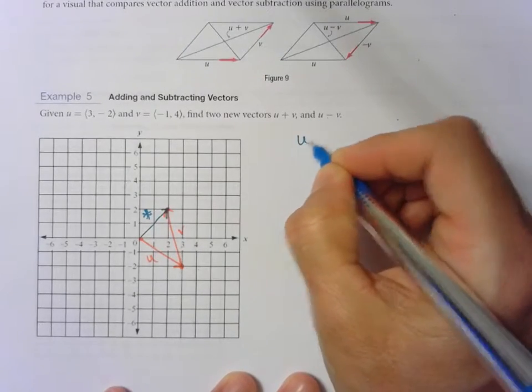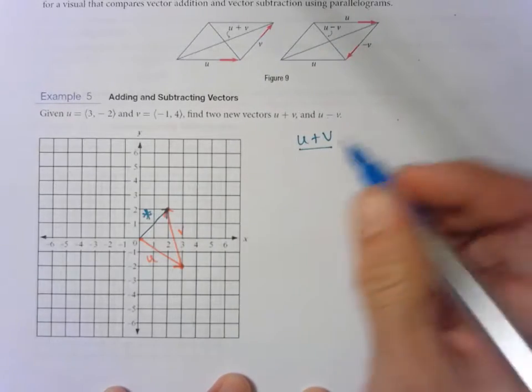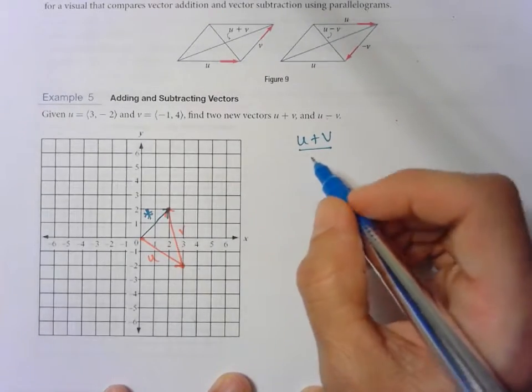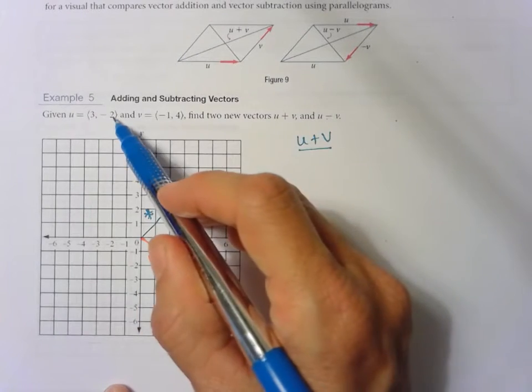To get u plus v, we add the x's and add the y's. Or rather, we add the a's and add the b's.